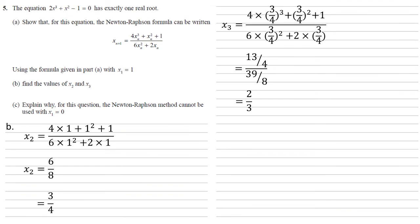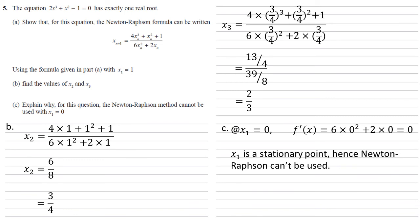Now for part c we need to explain why for this question the Newton-Raphson method cannot be used if x1 equals 0. Well at x1 equals 0, f dash x is equal to 0 which means x1 is a stationary point and the Newton-Raphson can't be used.